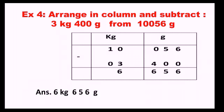Now look at the fourth example: arrange in column and subtract 3 kg 400 gram from 10056 gram. Two different units are there, but the minuend is not yet converted. So first convert: 10056 gram equals 10 kg 56 gram. Write 10 under kg and 056 under gram. Then write 3 under kg and 400 under gram for the subtrahend. After subtraction, I have got 6 kg 656 gram.